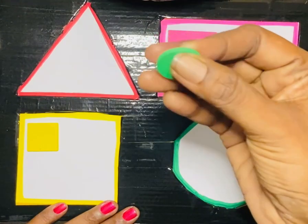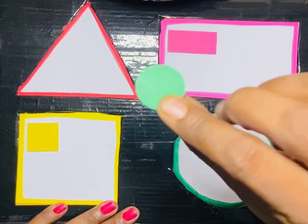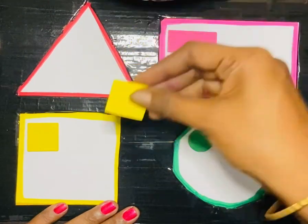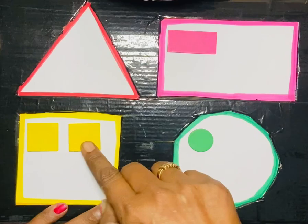So next one, Circle. Circle has no corner and no sides. Square. So I will keep it here.